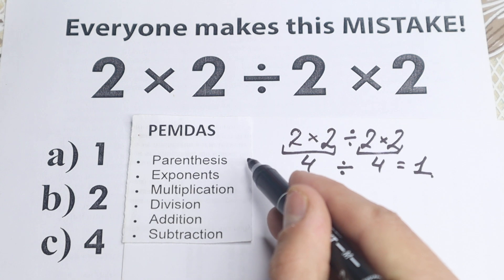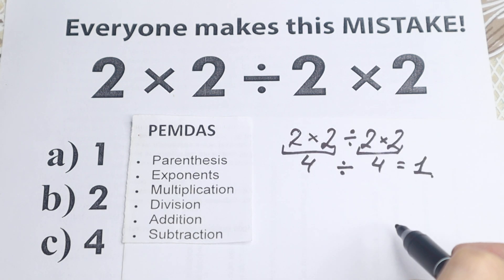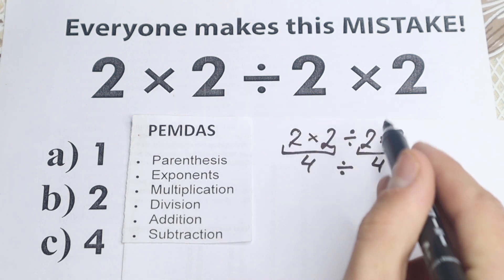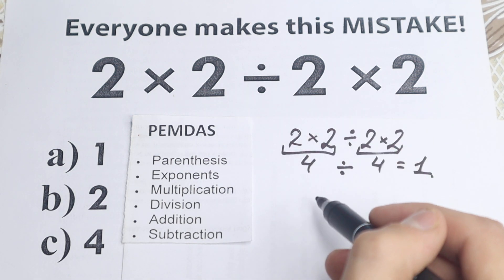So right here the first step is parentheses. Are there any parentheses right here? No, I don't see any of those. Moreover, I don't see any exponents right here. So I don't have any squares, cubes right here.